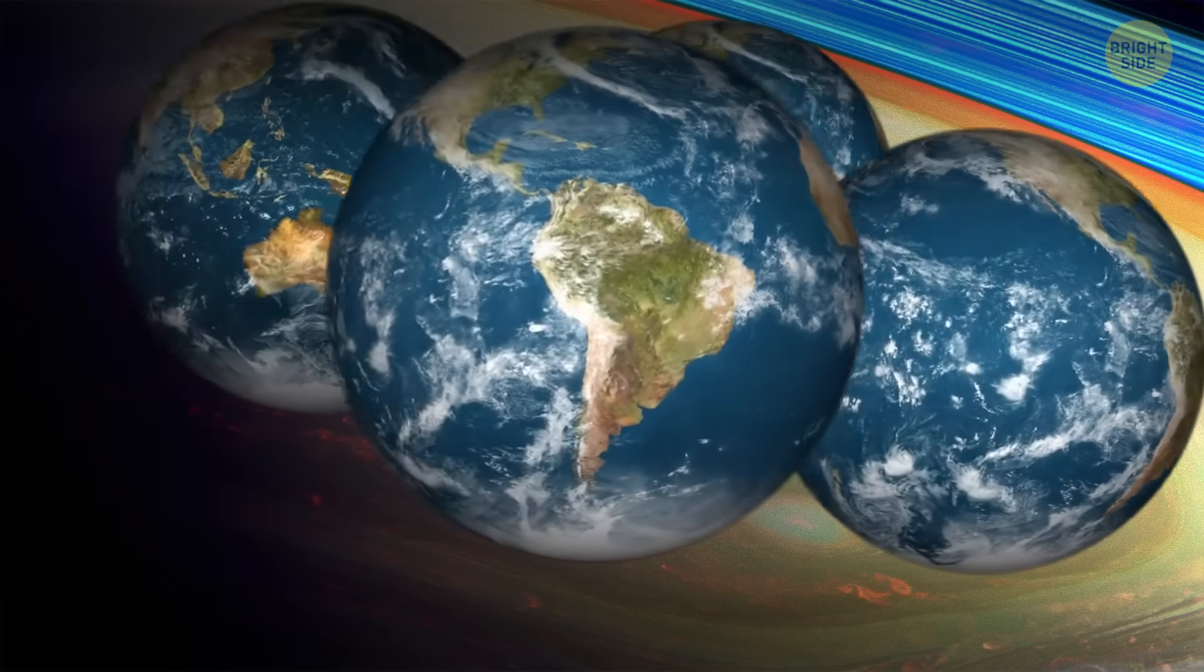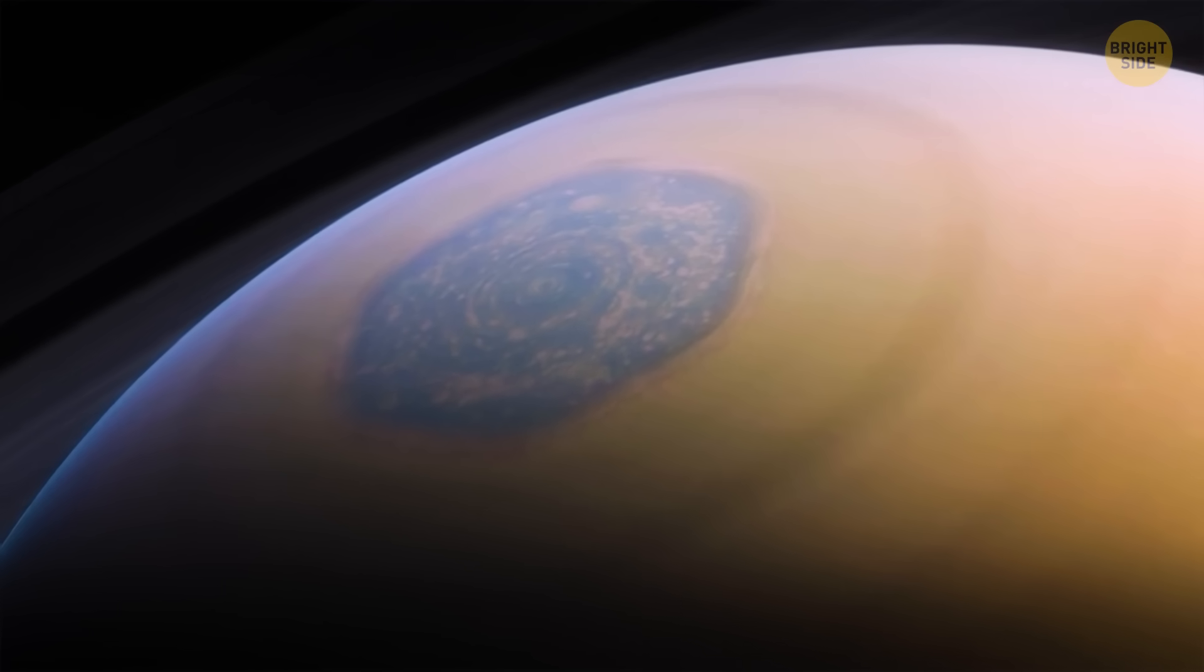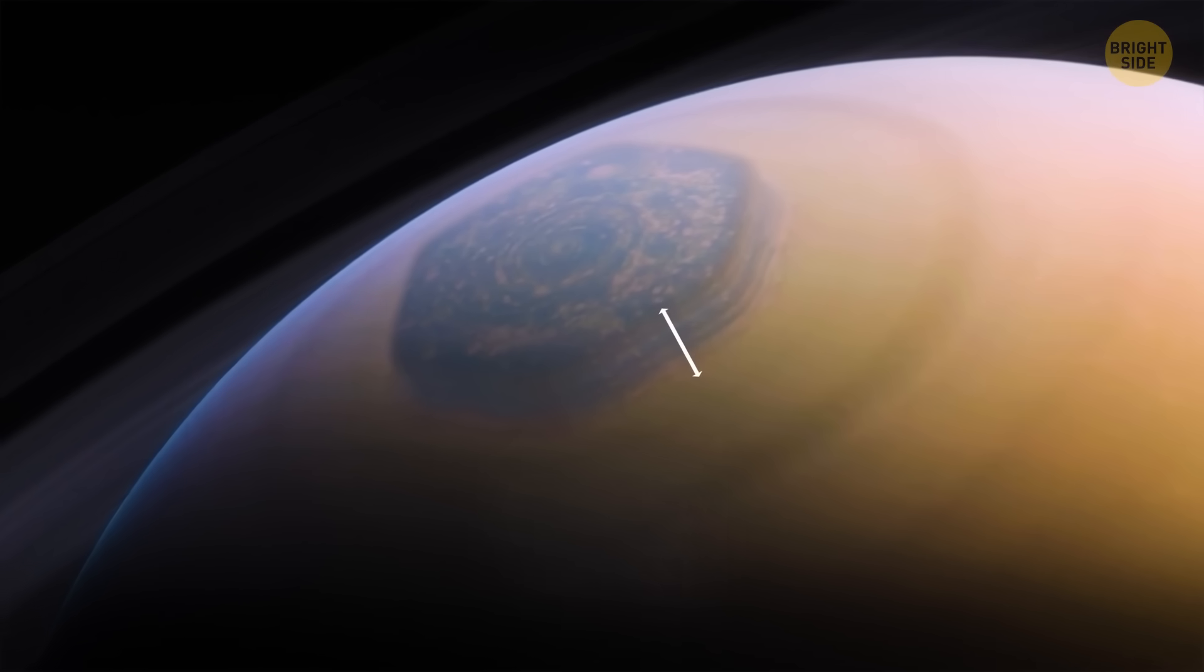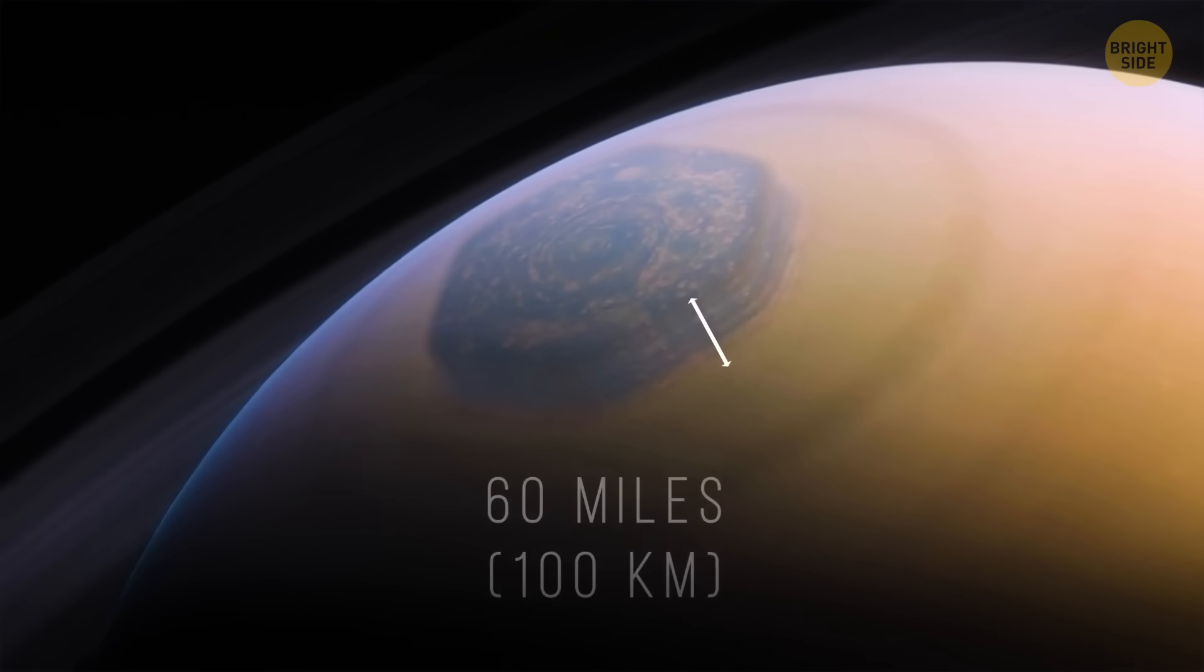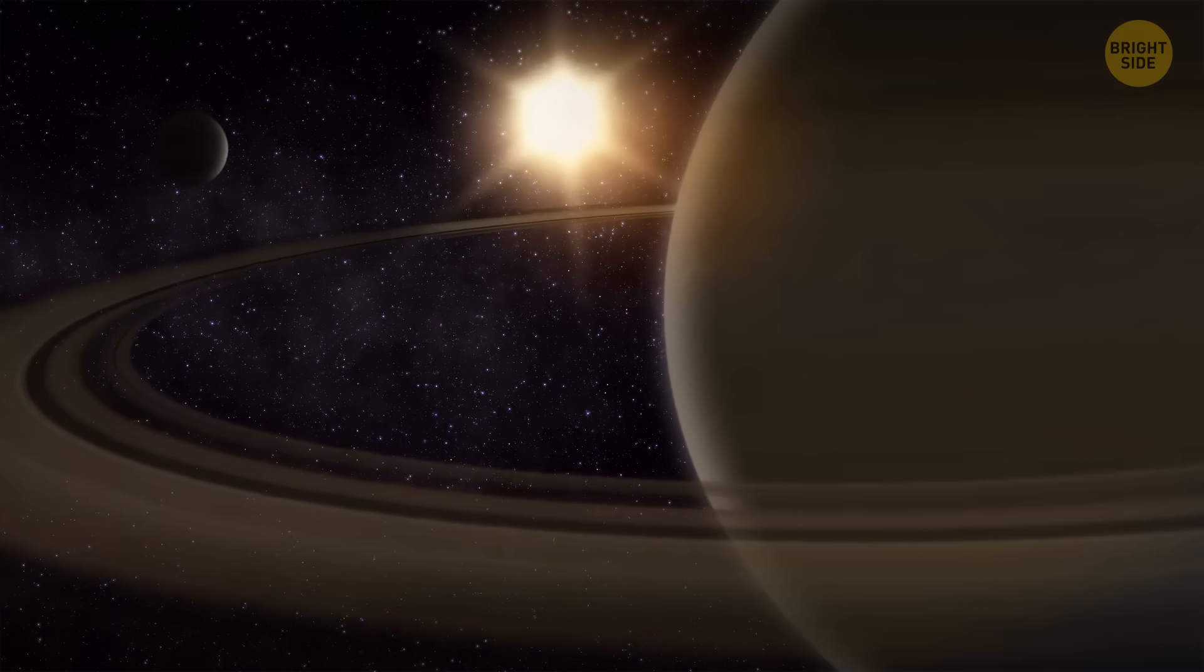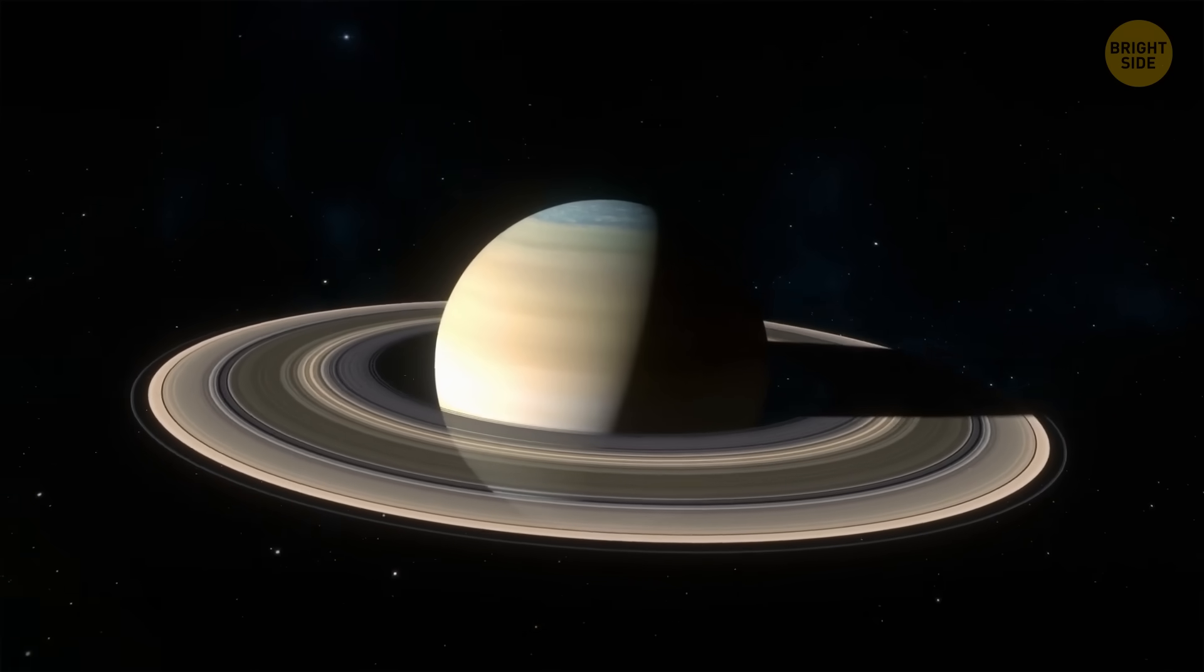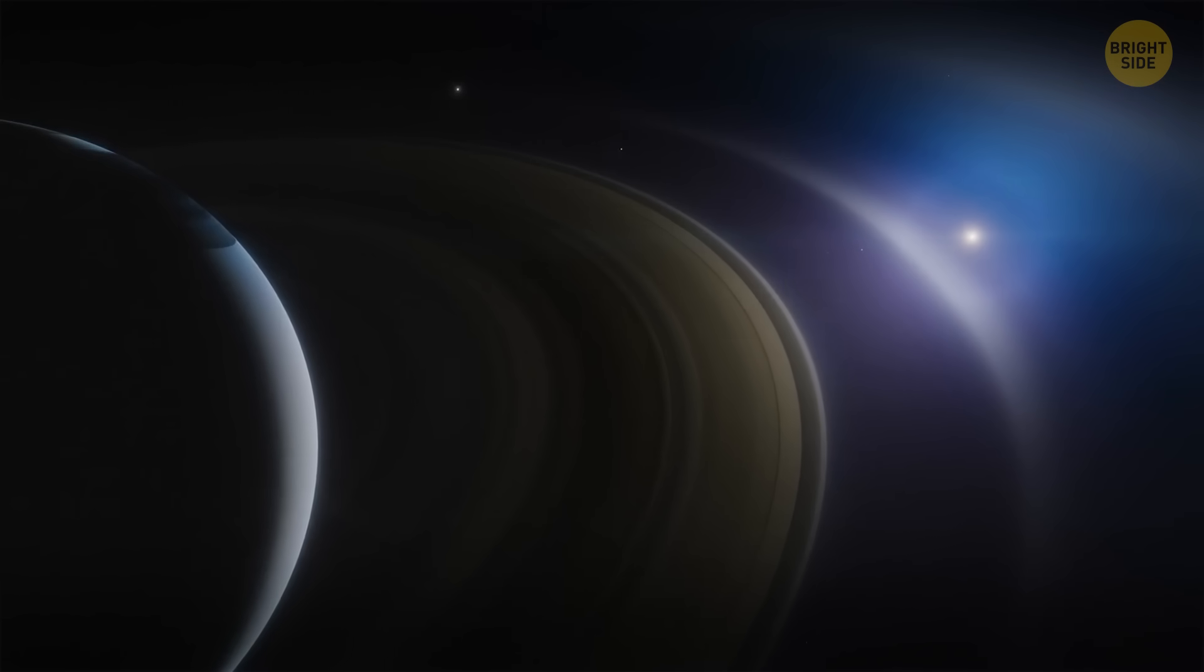According to thermal images, this hexagonal cloud pattern goes down into Saturn's atmosphere for around 60 miles. The planet is hiding behind thick clouds, and sunlight can't get through them. That's why astronomers can't see what exactly is going on there. But there are theories.